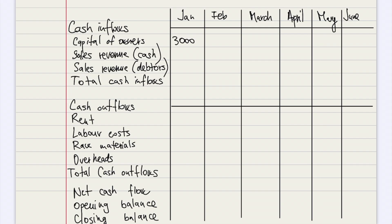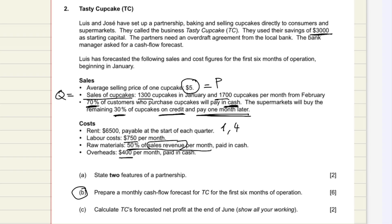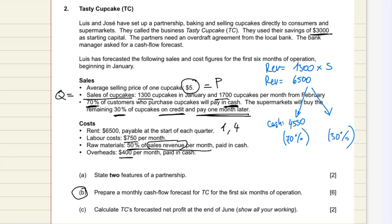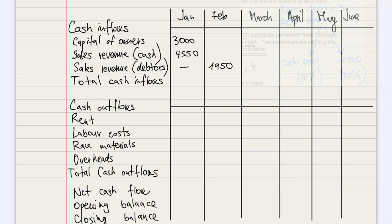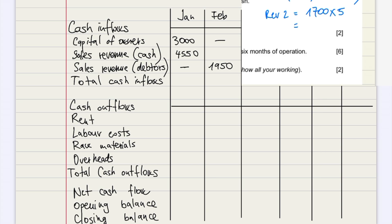Then we need to calculate the revenue. The revenue in January would be the quantity of 1,300 cupcakes times the price of $5. Then we calculate the cash: 70% of the revenue is going to be paid in cash, and 30% is going to be paid as credit one month later. We insert the values into the cash flow forecast, then calculate the revenue for February until June using the same methodology — 70% paid in cash and 30% paid in credit.